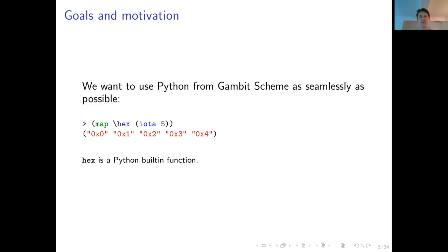Our goals and motivations are quite simple. We want to be able to use Python from within Gambit Scheme as seamlessly as possible. Here, you see an example of what we mean by that. We want to be able to map Python functions. The hex function is a Python built-in function. We want to be able to map this object onto a list, which is a Scheme list, and get back a result.